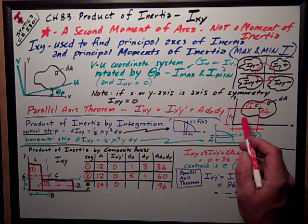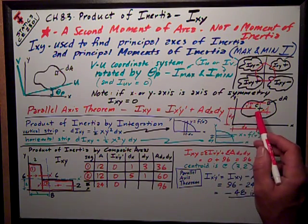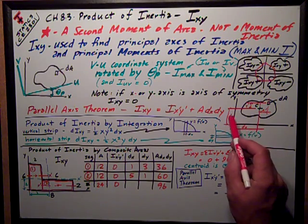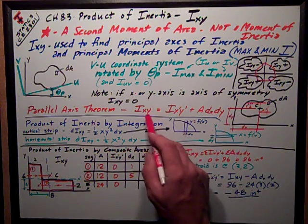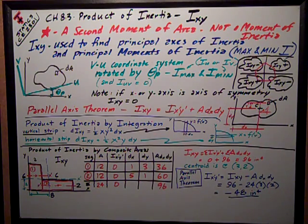And it's got this ADXDY term, where DX and DY are the distance from the axes that I'm taking the product of inertia about to its centroid. Very similar to the moment of inertia.